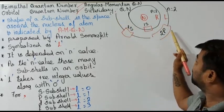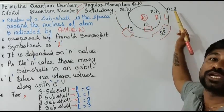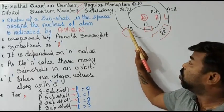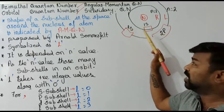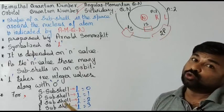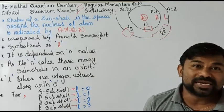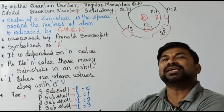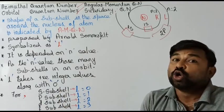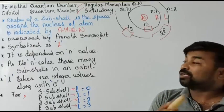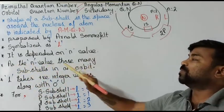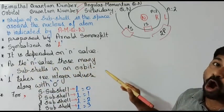In the same way, go to the second orbit — the principal quantum number is two. How many subshells does it have? It has two subshells: 2s and 2p. So as many as the value of the principal quantum number n, that many subshells are there in the orbit.